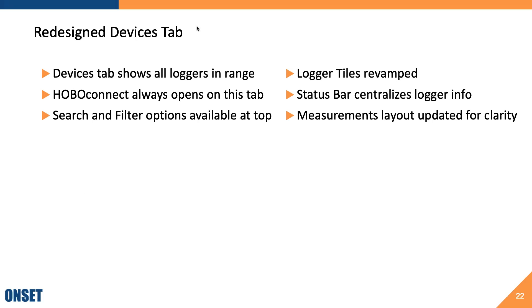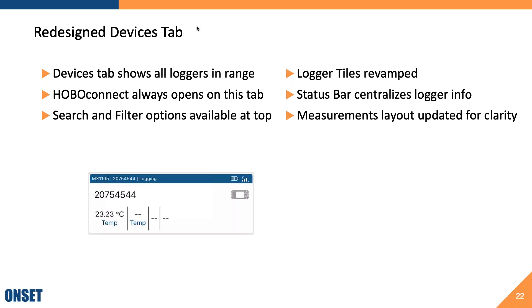Now let's move to the first tab in HOBO Connect — the Devices tab. The Devices tab shows all loggers in range of your device, and HOBO Connect always opens on that tab so you can easily find and manage your devices. If you have a lot of devices, you may find the search and filter options at the top of the Devices tab helpful. In the upcoming revamp, we've reorganized the logger tiles — one tile per logger in range — to be more useful. At the top, we've centralized all logger information into a status bar showing the logger family, serial number, and logger status.